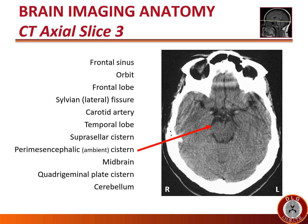The perimesencephalic cisterns are CSF spaces surrounding the midbrain — peri means around, mesencephalic means midbrain, so 'around the midbrain cistern.' Another name for it is the ambient cistern. The posterior cerebral arteries run in the perimesencephalic cisterns. These cisterns commonly fill with blood during subarachnoid hemorrhages, and become obscured when the uncus of the temporal lobe herniates during uncal or transtentorial herniation.